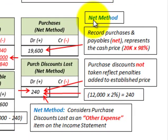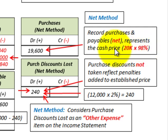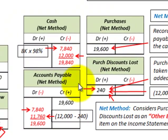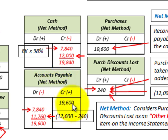Now let's look at the net method. With this approach, you record purchases and payables at the net amount, which represents the cash price. We take the full 2% discount into account immediately: $20,000 times 98% (100% minus the 2% discount) gives $19,600. We debit our purchases account for $19,600 and credit accounts payable for $19,600, recording it at the net amount.